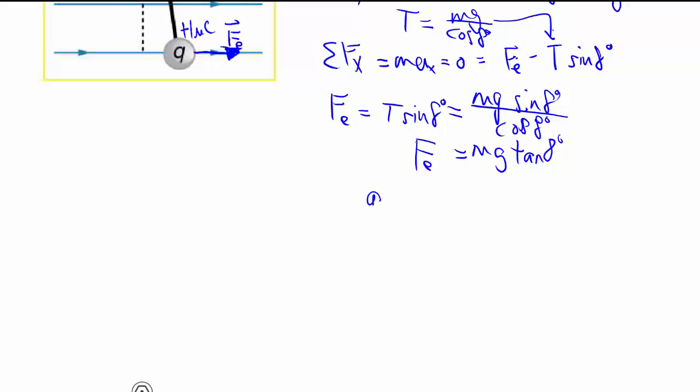And we know Fe is equal to Q times E, or at least the magnitude of it, we know we've been given a direction. So then we just divide Q over, easy peasy.